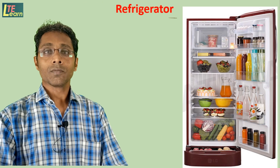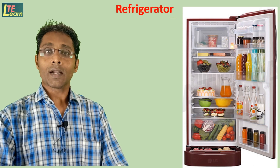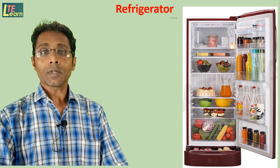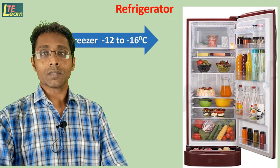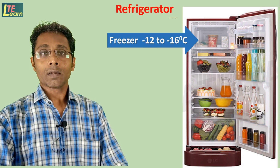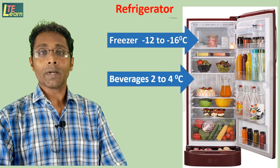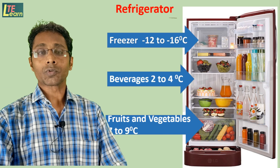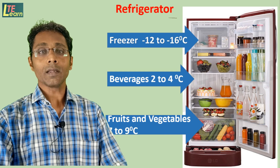A refrigerator is a device used to store foodstuff and liquids at a temperature below the surrounding temperature. Normally the refrigerator's inside cabinet is divided into a number of sections. The upper section is called the freezer, where the temperature is very low — that is, negative temperature. The middle compartment is used to store beverages and the lower compartment is used to store fruits and vegetables, where the temperature range is 7 to 9 degrees Celsius.